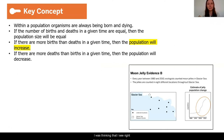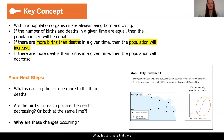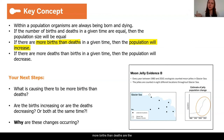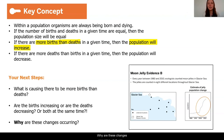If the population will increase when there are more births than deaths, then there must be more births than deaths in the moon jelly population. But what does this really mean? What is causing there to be more births than deaths? Are the births increasing, or are the deaths decreasing, or are both happening at the same time? Why are these changes occurring? What was happening in the ecosystem where moon jellies live for these changes to suddenly start occurring in 2000?